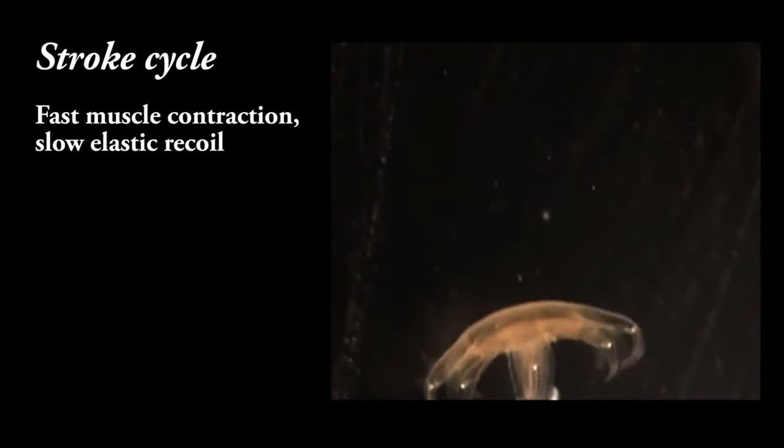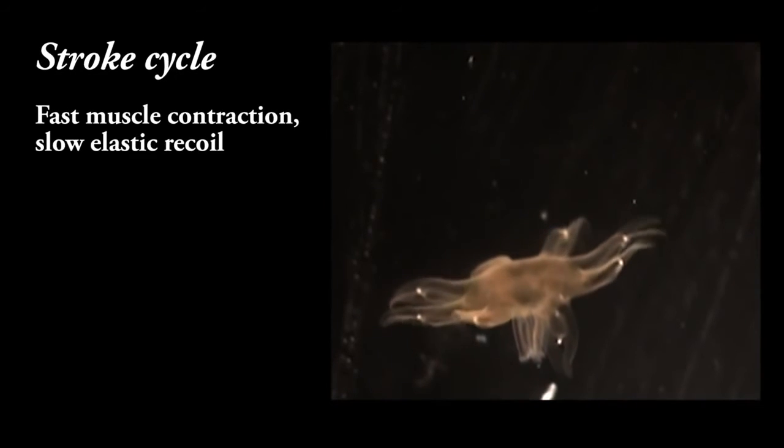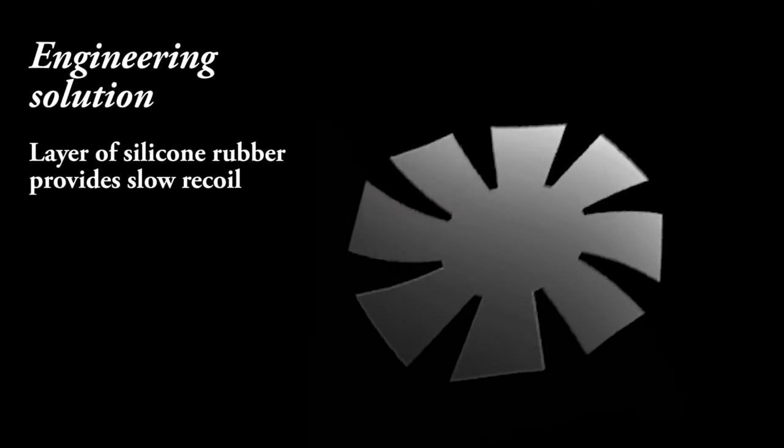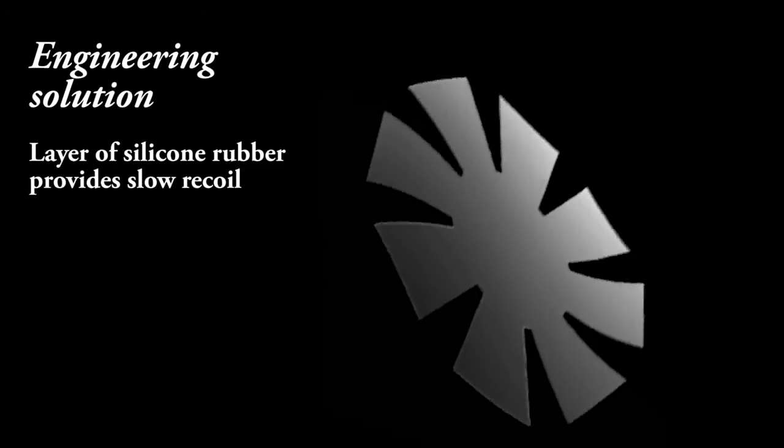A third design principle is the stroke cycle, in which fast muscle contraction alternates with slow elastic recoil that restores the jellyfish shape. In the engineered jellyfish, elastic recoil is provided by a layer of silicone rubber.